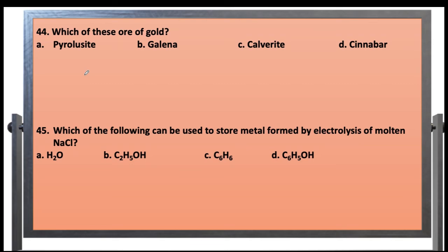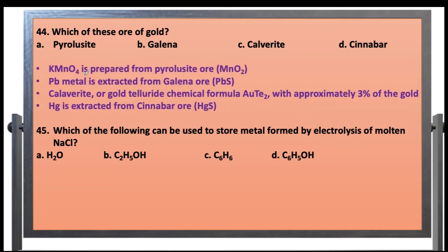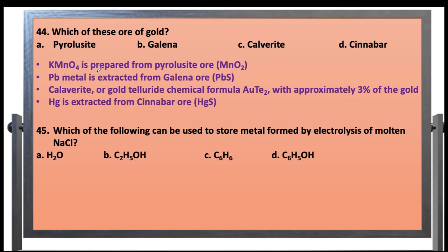Question 44: Which of the following is an ore of gold? Pyrolusite is MnO2, from which manganese is extracted. Galena is PbS, lead sulfide, from which lead metal is extracted. Calaverite is a gold telluride with the chemical formula AuTe2, containing approximately 3% gold — so calaverite is an ore of gold. Cinnabar is HgS, mercury sulfide, from which mercury is extracted. Therefore, calaverite, option C, is the correct answer.